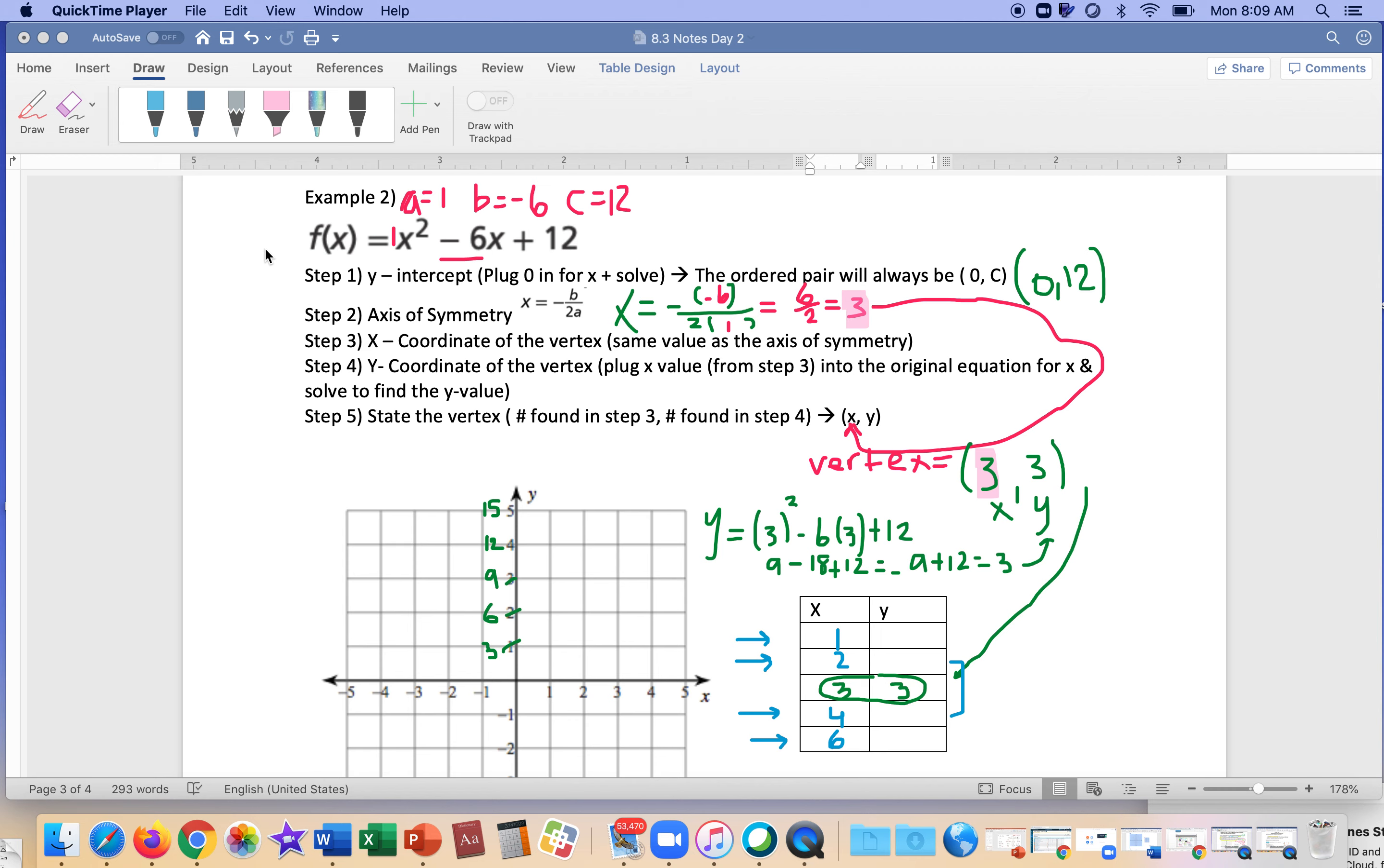Okay, so for example 2, you are going to see that a is 1, b is negative 6, it's not 6, it's negative 6, and c is positive 12. The y-intercept is 0c, so it's 0, 12, because c is 12.